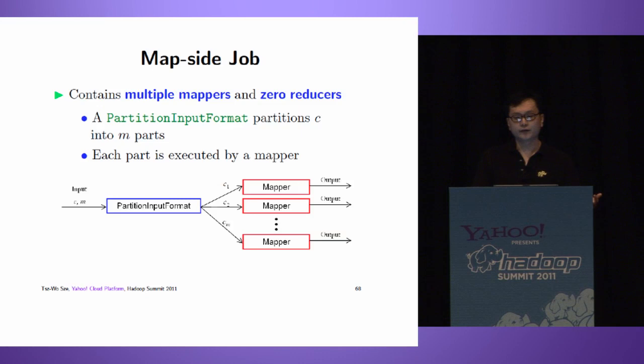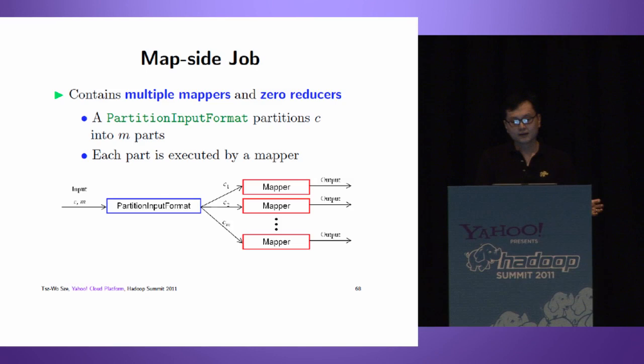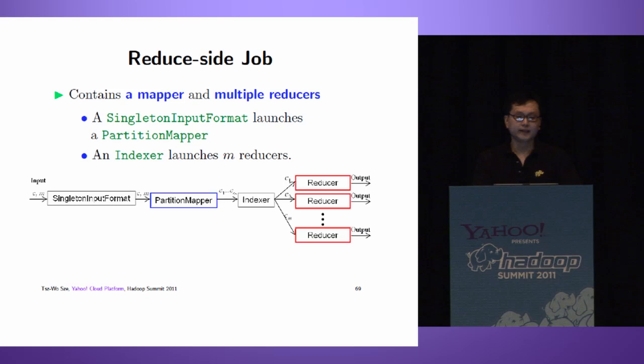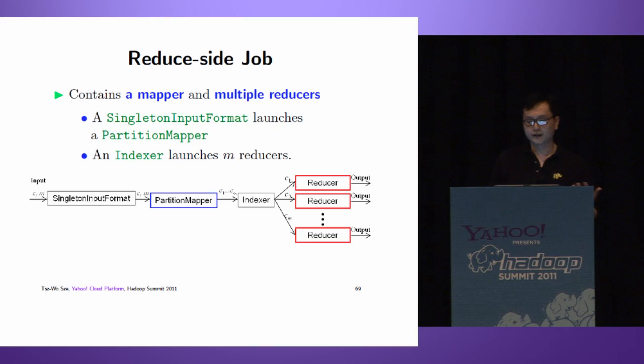For the map side job, it contains multiple mappers and serial reducers. We have partition input format that reads the input computation and integer M, partitions the computation into M parts, and launches a mapper for each part. We also have a reduce side job with a single mapper and multiple reducers. Single-turn input format reads input and forwards to the partition mapper, which partitions computation into M parts and forwards to an indexer. The indexer launches a reduce task for each computation.